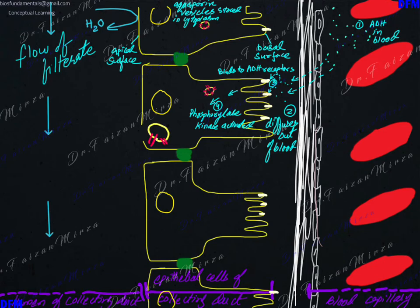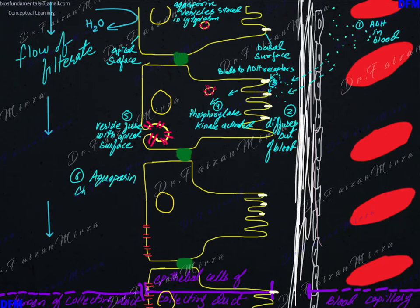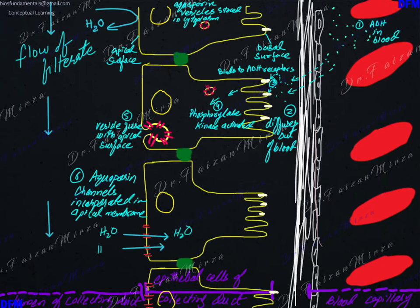The activation of the phosphorylase kinase enzyme triggers this vesicle which was stored in the cytoplasm to move towards the apical surface and get fused with the membrane. As the vesicle fuses with the membrane, the aquaporin channels become incorporated into the apical surface. The incorporation of the aquaporin channels in the apical surface makes the collecting duct cells permeable to water.